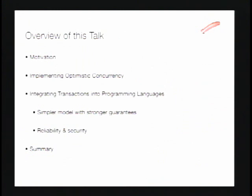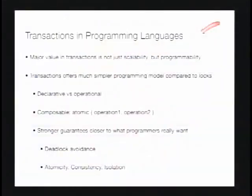A major value of transactional memory is not really just raw performance or scalability, but really programmability. What excites a lot of people about TM is that it offers a much simpler programming model compared to locks. It's declarative versus operational — as you saw in our examples, you don't have to say what lock you want to acquire anymore. You just say this body of code is atomic, and go figure it out.